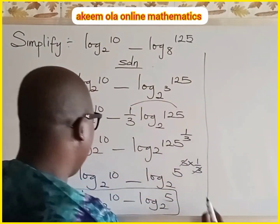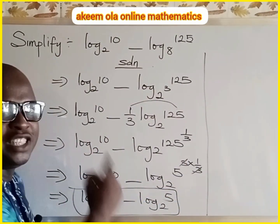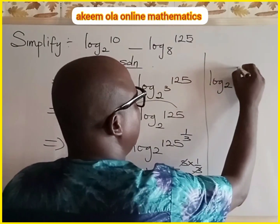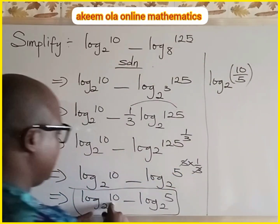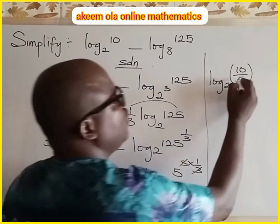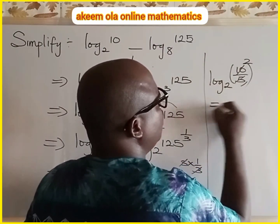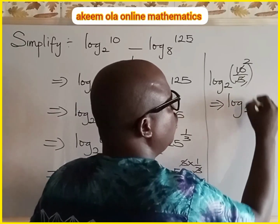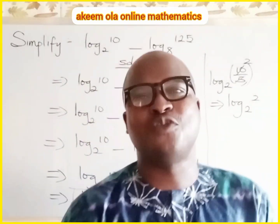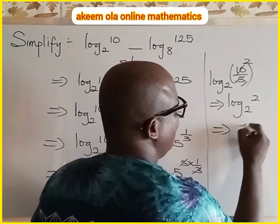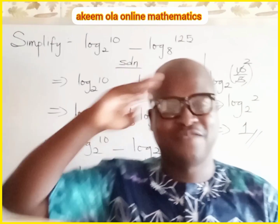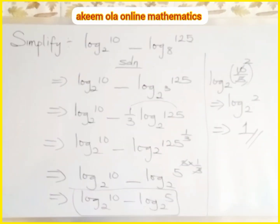Now, log minus log means we apply the division law: we change the subtraction to division, giving us log base 2 of (10 over 5). Since the base is common, we simplify: 10 over 5 equals 2, so we have log base 2 of 2. When the base and the argument are the same, the result is always equal to 1. So our answer is 1. Thank you for watching, God bless you.